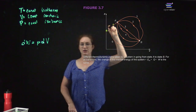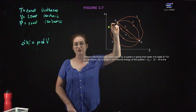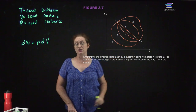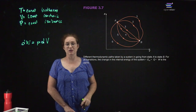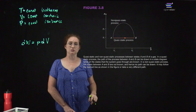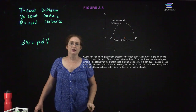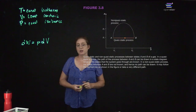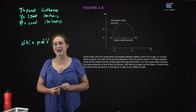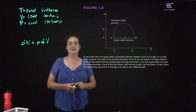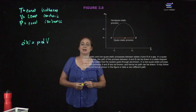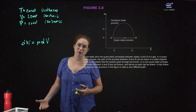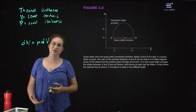The change in the internal energy of the system is going to be the same however you travel between two states. When we talk about these processes, we're going to be talking about them as quasi-static. What that means is that at any given point, you're basically in equilibrium at that point in the phase diagram.